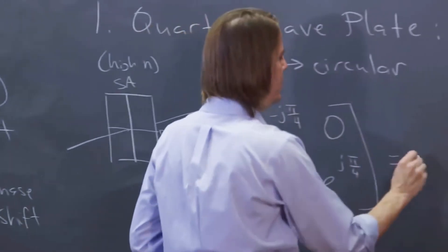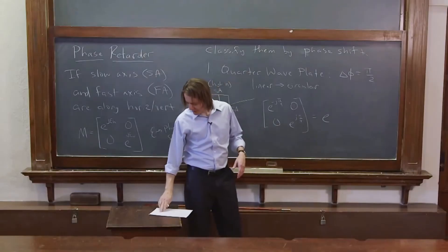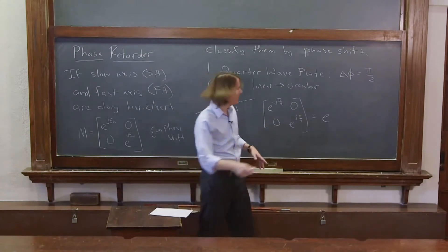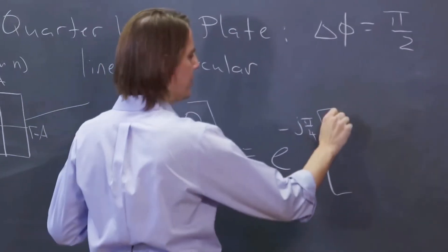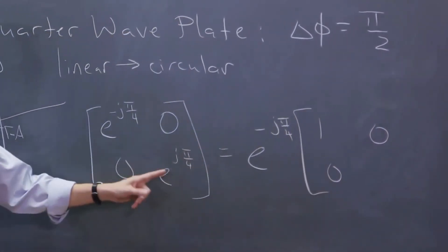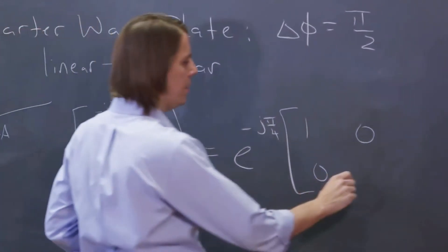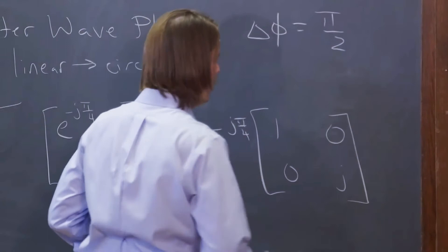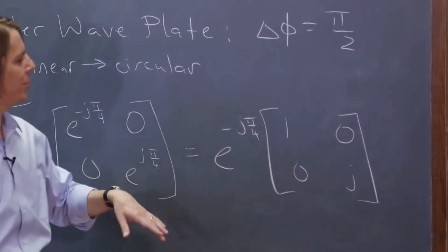And we write it that way, because then you can make it look nice by pulling out e to the minus j pi over 4. And this goes 1, 0, 0. And then you divide that by a minus that. It's e to the 0, and then there's a j there.